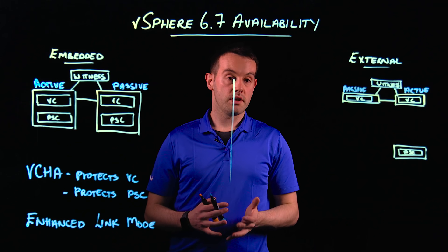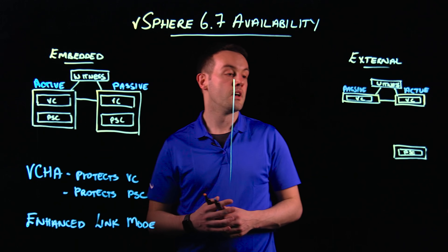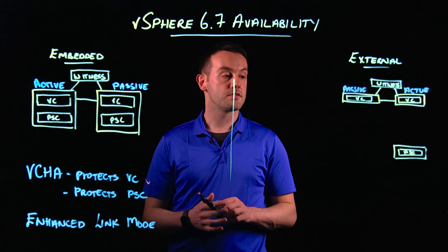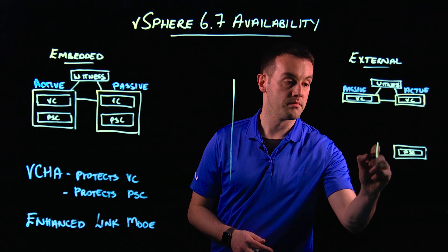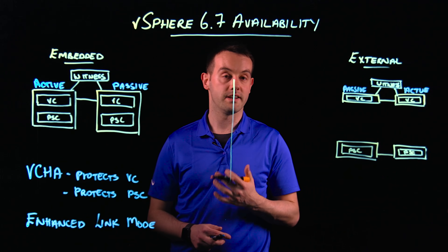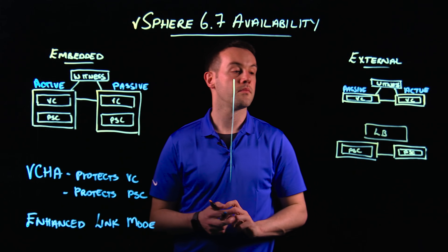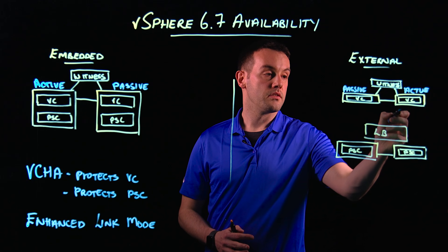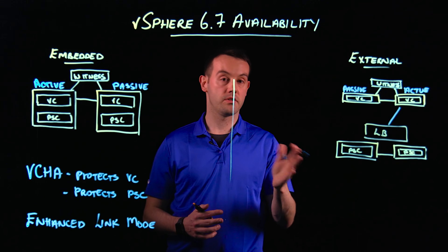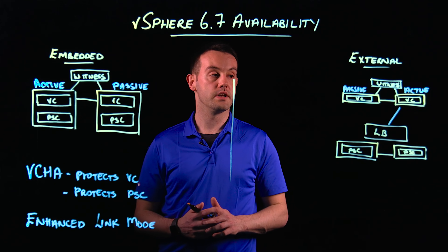This is only protecting half of the story. If a vCenter Server goes down, it'll fail over to our passive and we'll get back up and running. However, we don't have any protection at our PSC layer. When a PSC is external, we need to separately enable PSC HA. PSC HA is where we deploy an additional PSC into the same SSO domain and the same site, and we place them behind a load balancer. Whichever is our active vCenter will point to the load-balanced FQDN. If one of the PSCs goes down, the load balancer will automatically redirect traffic to the next available PSC. We can have up to four PSCs behind the load balancer for additional redundancy.